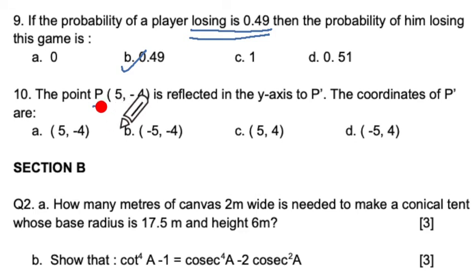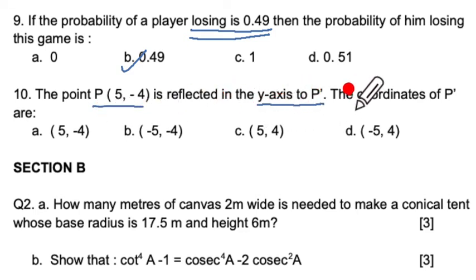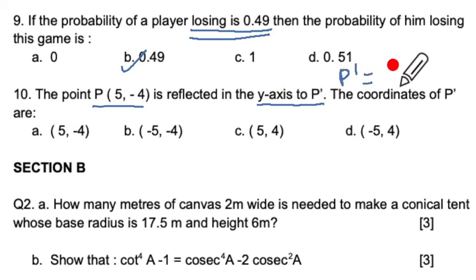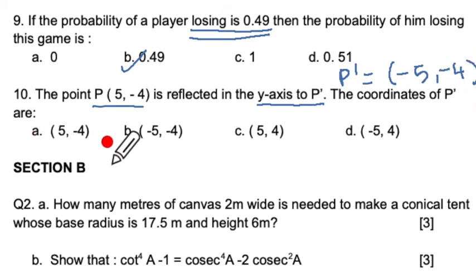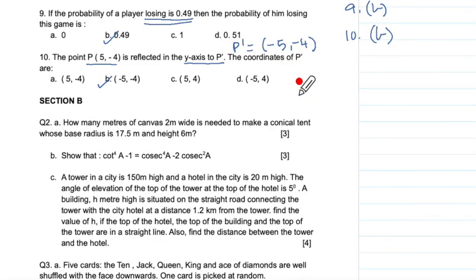Question 10: a point is reflected in the y-axis to get P'. When reflecting in the y-axis, the x-coordinate changes sign. So P' will be (-5, -4). The answer is B. That finishes Section A, which carries 10 marks.